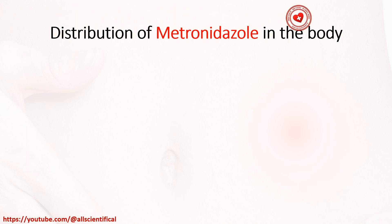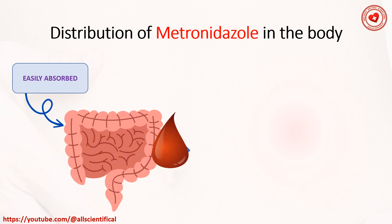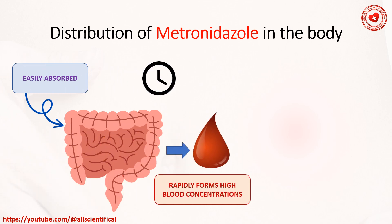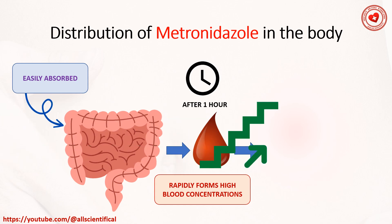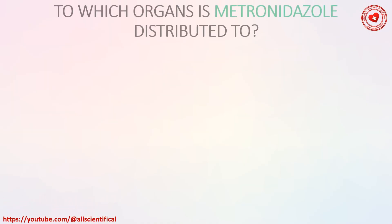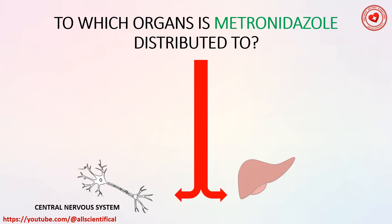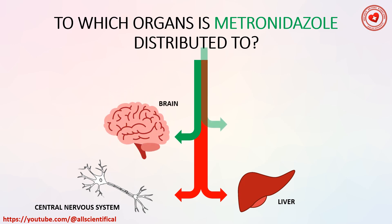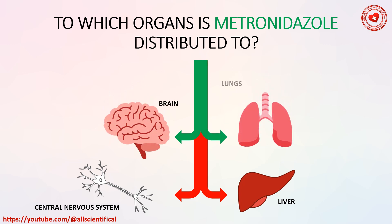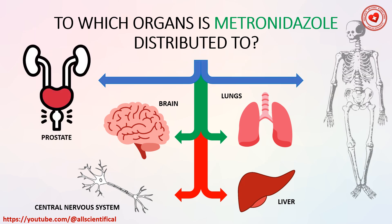Metronidazole is easily absorbed in the intestine, quickly forming high concentrations in the blood with a maximum after 1 hour, remaining at therapeutic concentration for at least 6 hours. It is distributed to the central nervous system, liver, brain, lungs, prostate gland, and bone tissue.